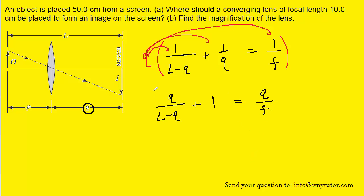We could next multiply the entire equation by the focal length F. Again, you want to distribute that to all of the terms in the equation. So for the first term we would end up with QF over L minus Q plus F is equal to Q.